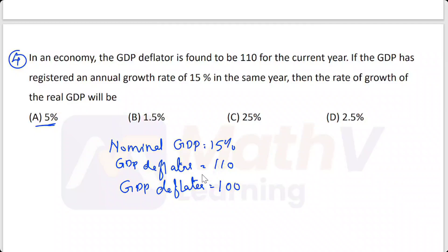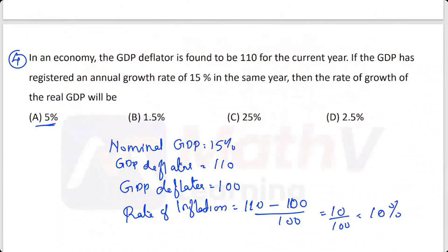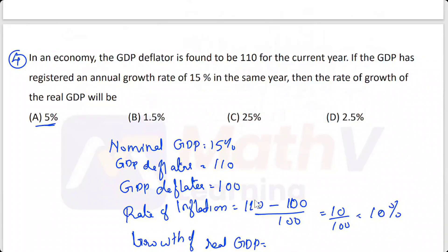The rate of inflation is the percentage increase in the GDP deflator. So the rate of inflation equals (110 minus 100) divided by 100, which equals 10 by 100, that is 10%. The real GDP growth rate equals nominal GDP growth minus inflation, which is 15% minus 10% equals 5%.